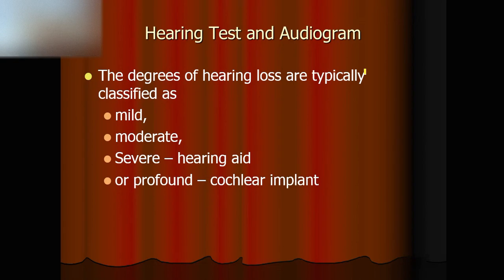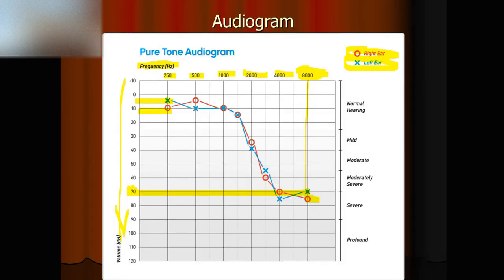Now I have a hearing test result and I see the chart — what does that mean? Based on the degree of hearing loss, there are typically four categories: mild hearing loss, moderate, severe, and profound. If our hearing loss is between minus 10 to 25, that's considered normal hearing. 25 to 40 is mild. Severe is 70 to 90. We will probably need to put on a hearing aid if we are in the severe range.